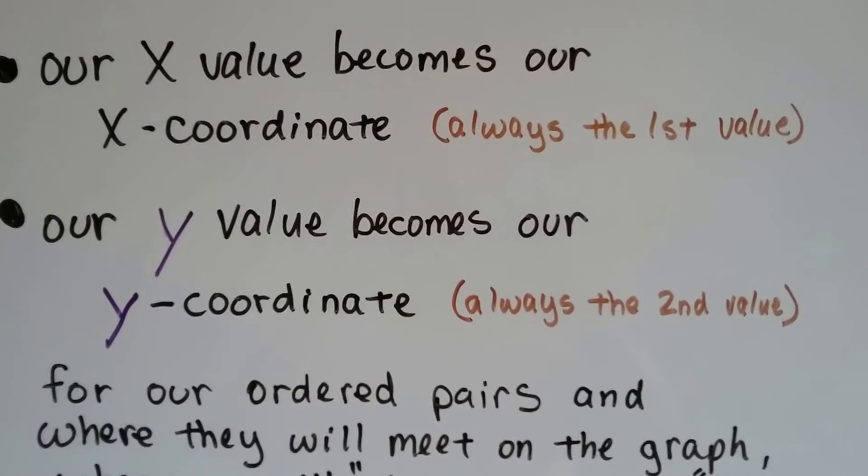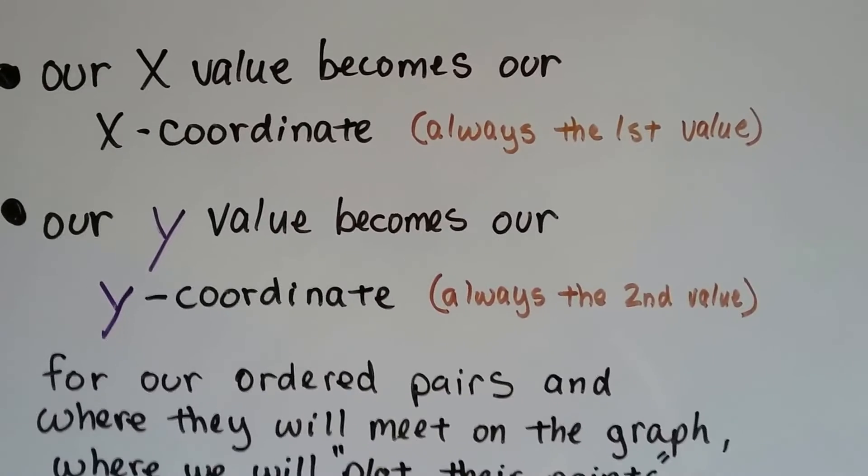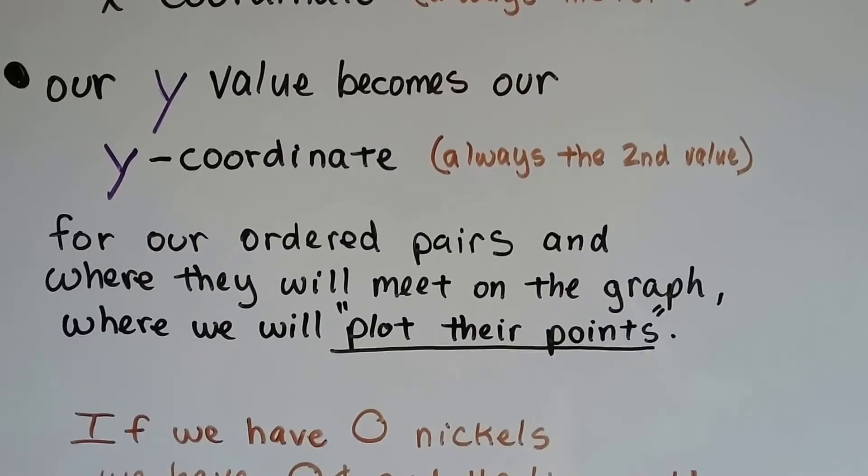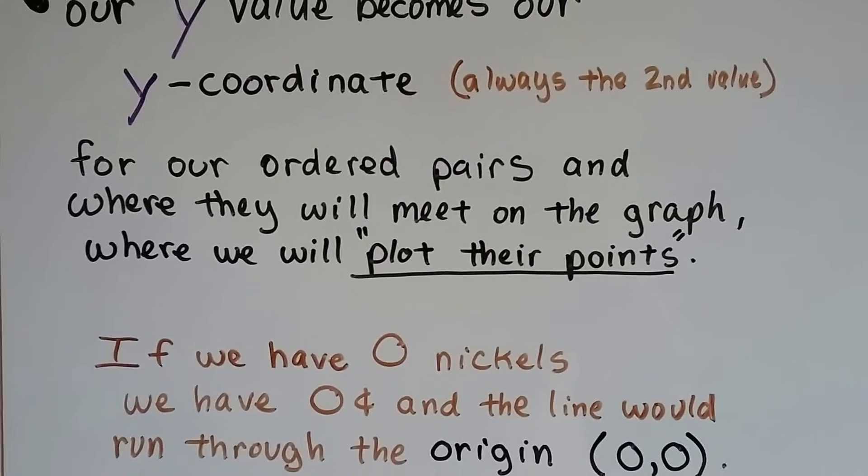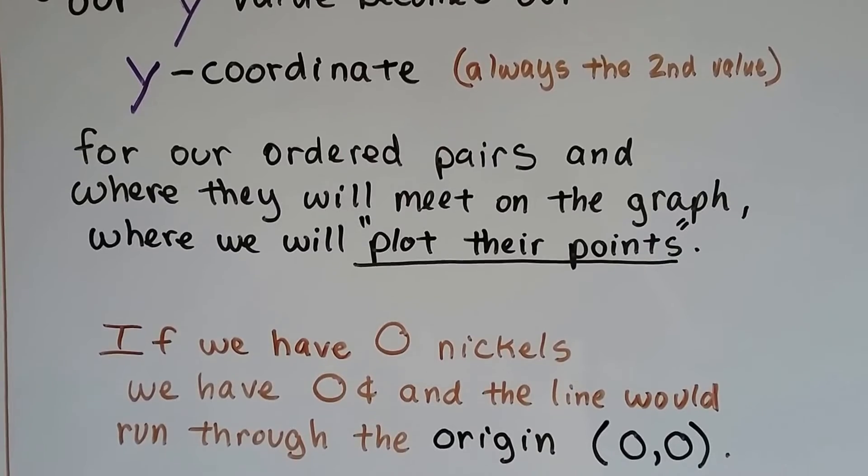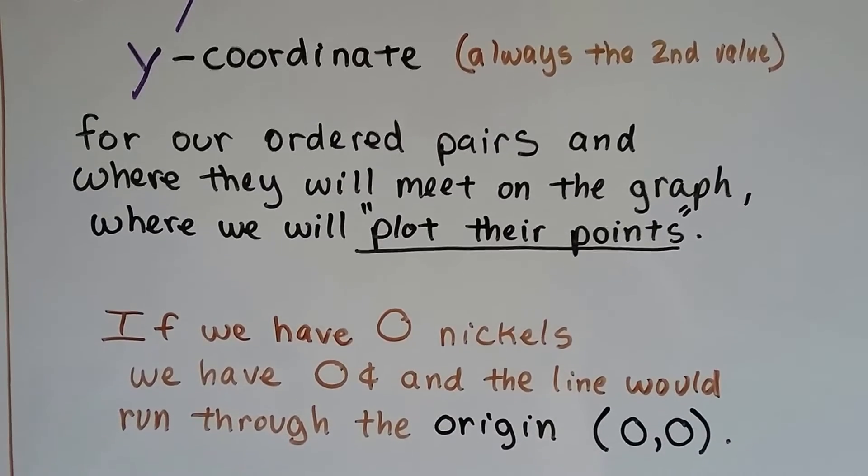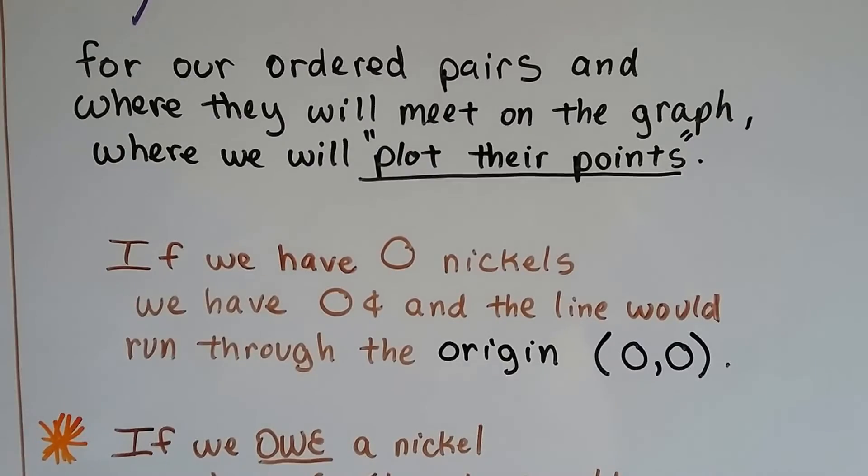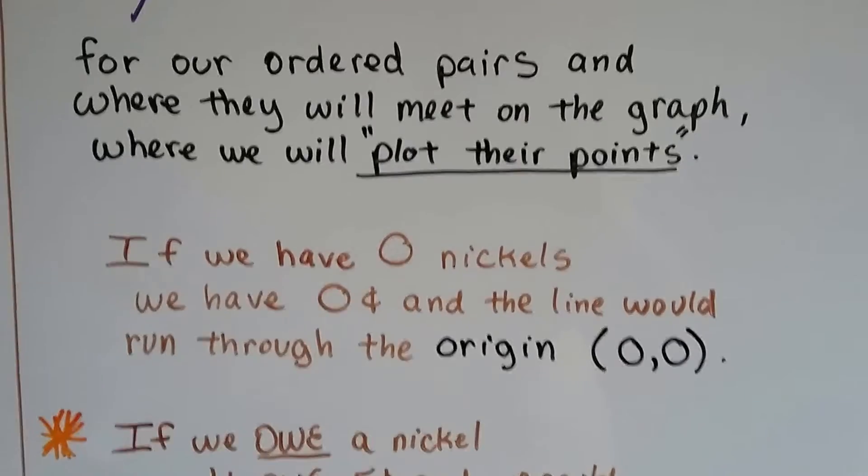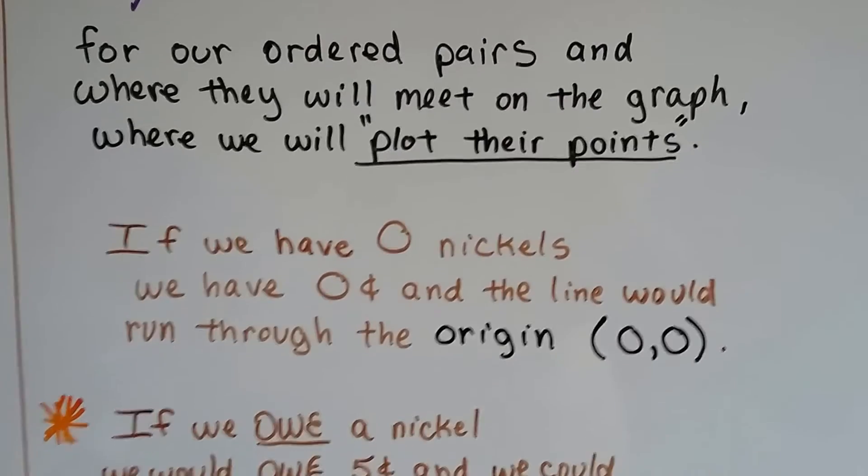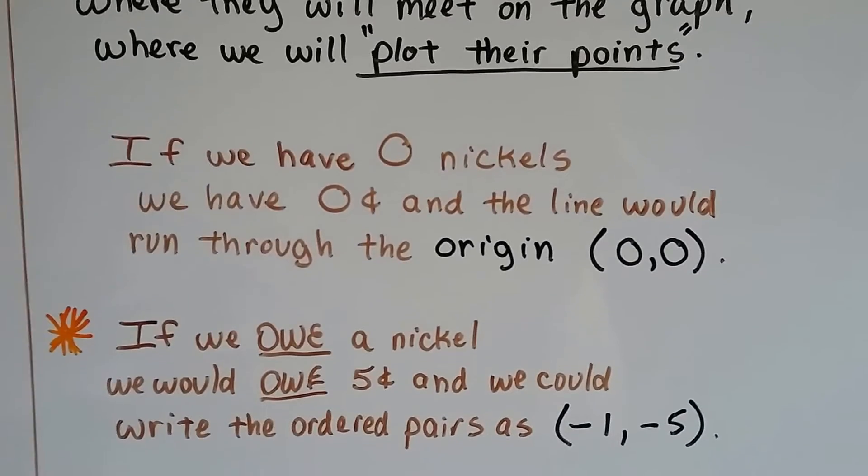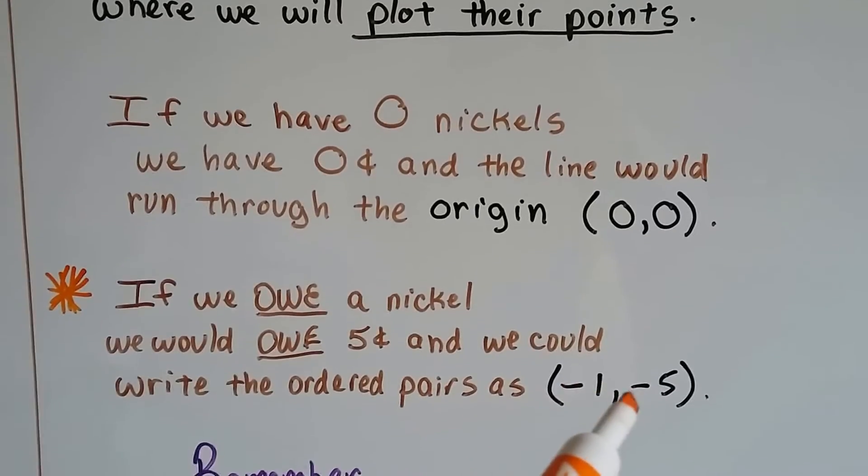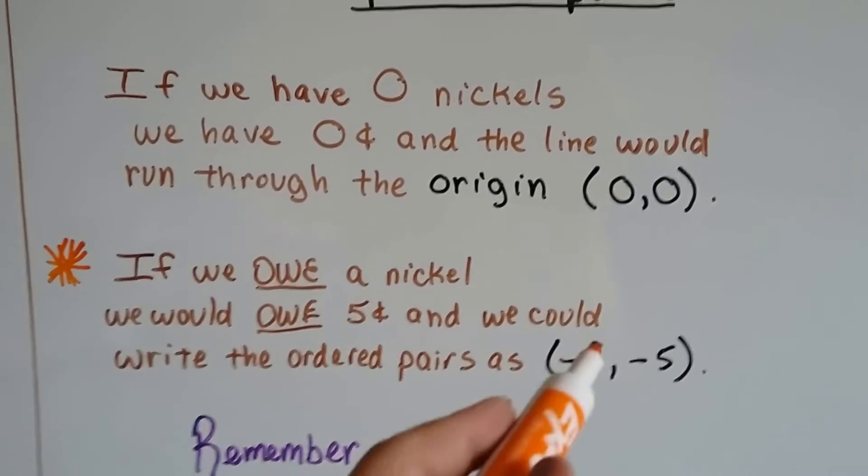So our x value becomes our x coordinate. It's always the first one. And our y value becomes the y coordinate. It's always the second value for our ordered pairs and where they will meet on the graph, where we will plot their points. If we have 0 nickels, we have 0 cents, and the line would run through the origin, the 0, 0. If we owe a nickel, we would owe 5 cents, and we could even write the ordered pairs as negative 1, negative 5. We could plot that, too.